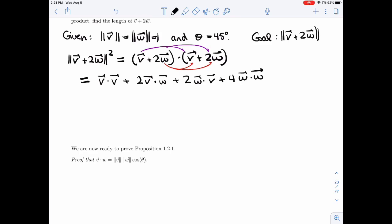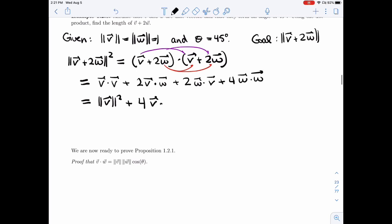All right, the length of W and V are 1. So these are going to give me the first and the last term. The two middle ones are the same because it's commutative. So 4 times V dot W plus 4 times the length of W squared.